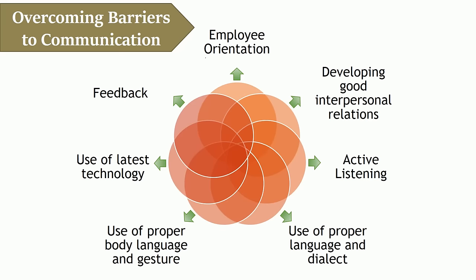Overcoming barriers to effective communication: there are certain ways which can help in overcoming barriers to communication and thus prevent confusion and misunderstanding between the sender and recipient. Employee orientation: new joiners should be informed about the company's plans, policies, procedures and authority relations during orientation, avoiding conflicts. Developing good interpersonal relations: good relationships should be maintained in the organization; status differences should be shelved, and suggestions and valid criticism should be appreciated.